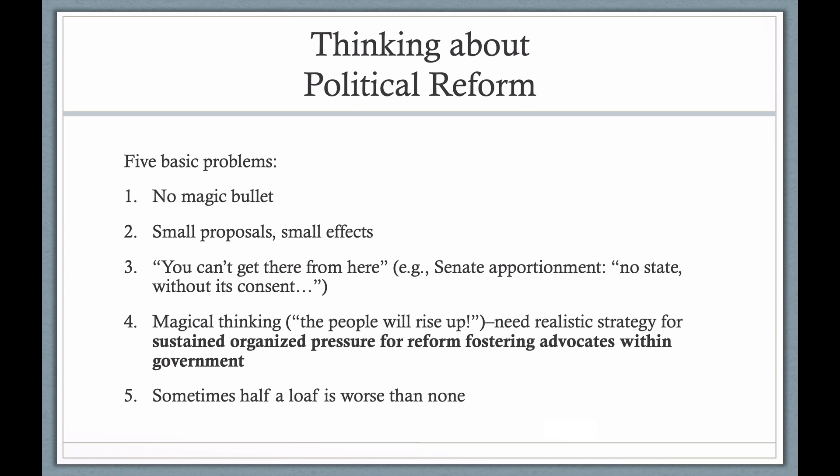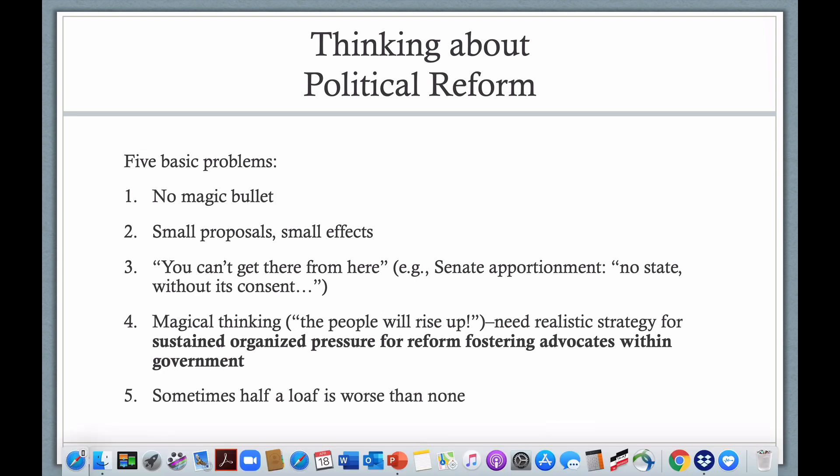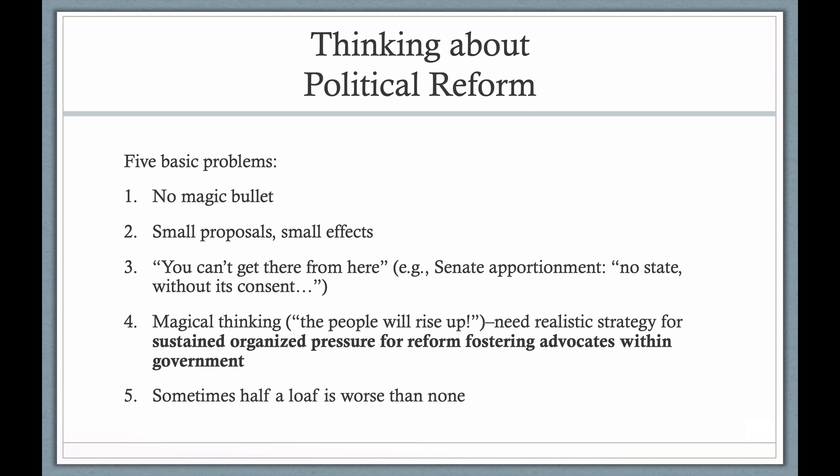One set of problems comes from structural changes that run afoul of our basic constitutional structure. For example, the malapportionment of the Senate — the Constitution itself says that no state without its consent shall be deprived of equal representation in the Senate, and it's impossible to imagine less densely populated states approving such a change. We should also resist magical thinking — the idea that public revulsion will drive a groundswell of support for change. Instead, we need to think about what groups can bring sustained organized pressure for reform and how to foster long-term advocacy within government, because it is elected representatives who ultimately are the brokers who make reform happen.